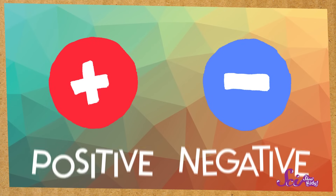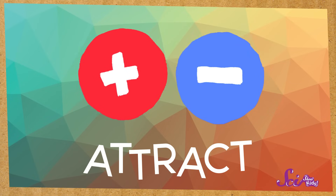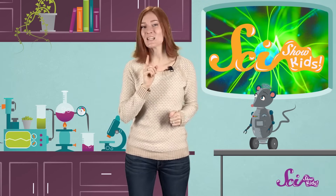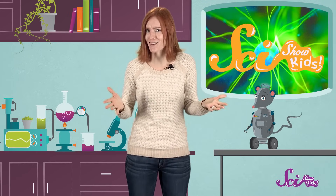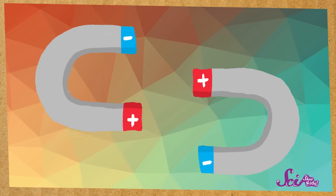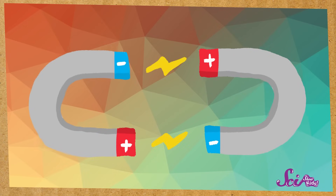Positive and negative are special because they attract each other — that means they pull on one another. If you've ever played with magnets, then you've already experienced things that attract. When I line up two magnets just so, they pull on or attract each other.